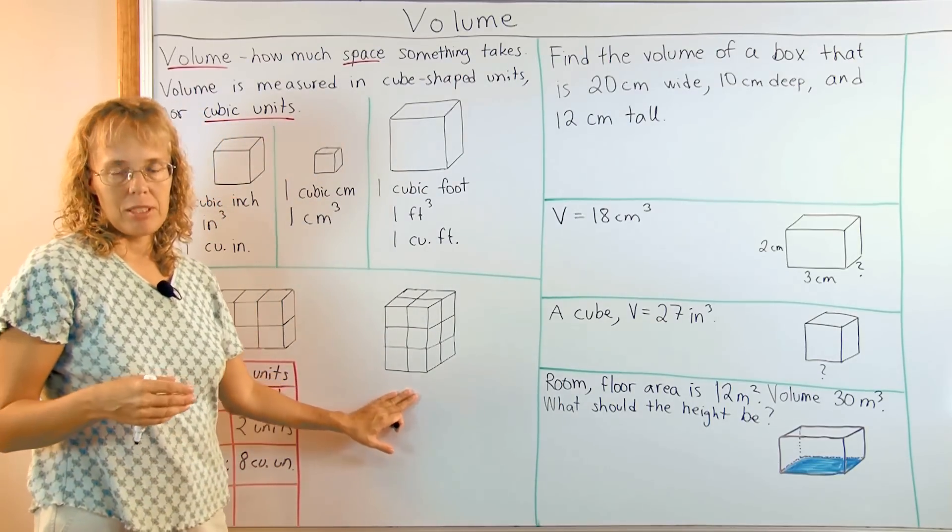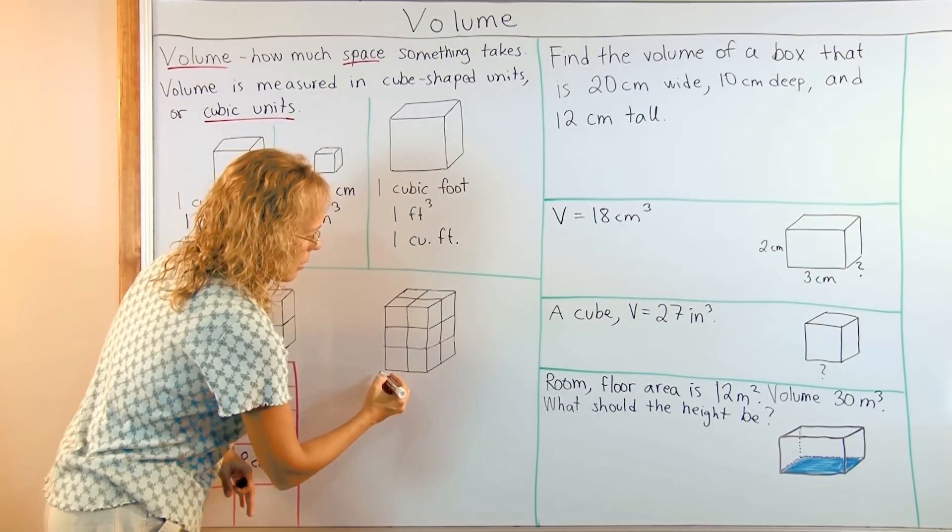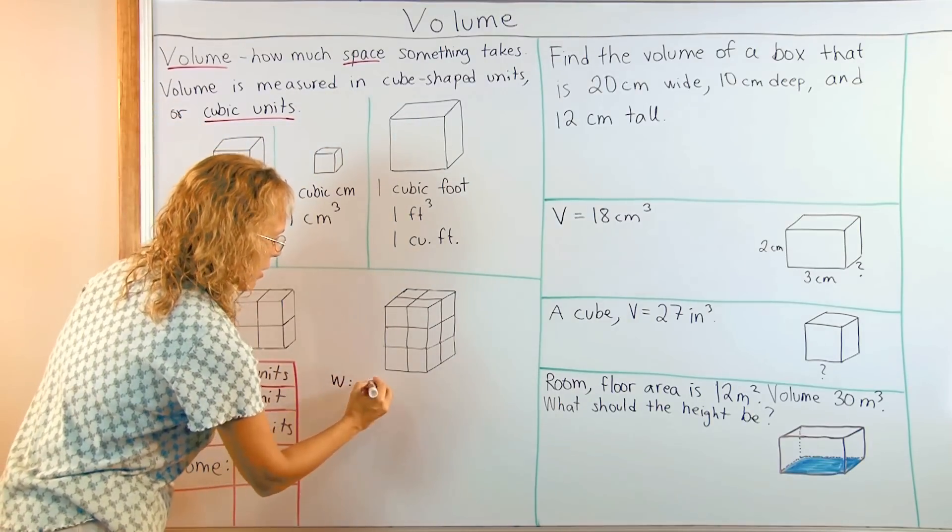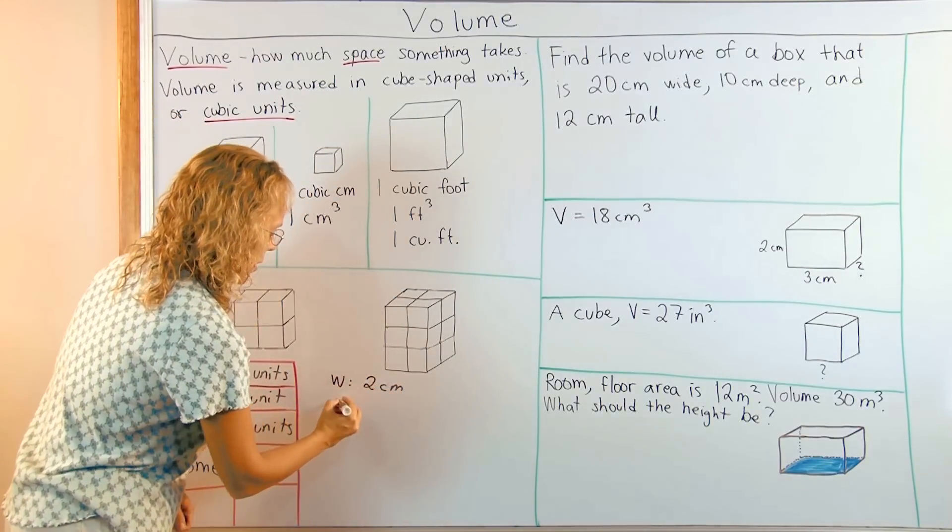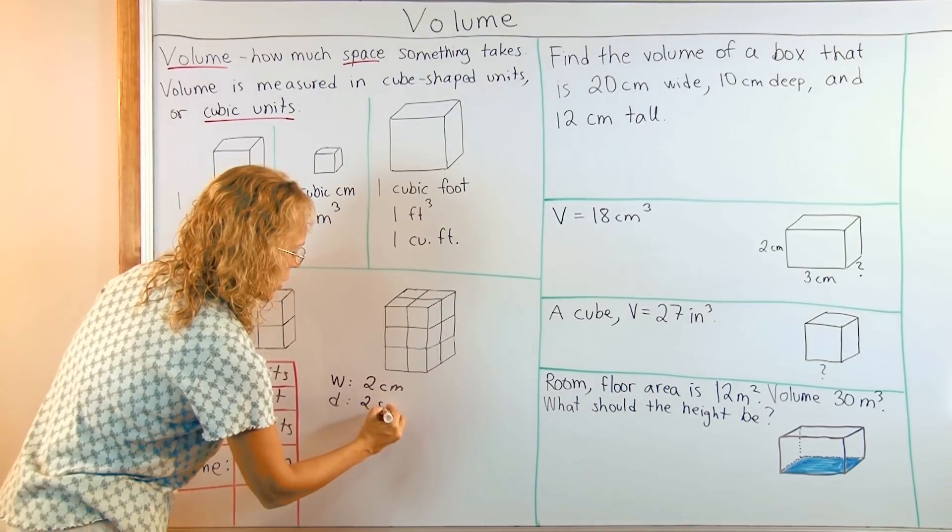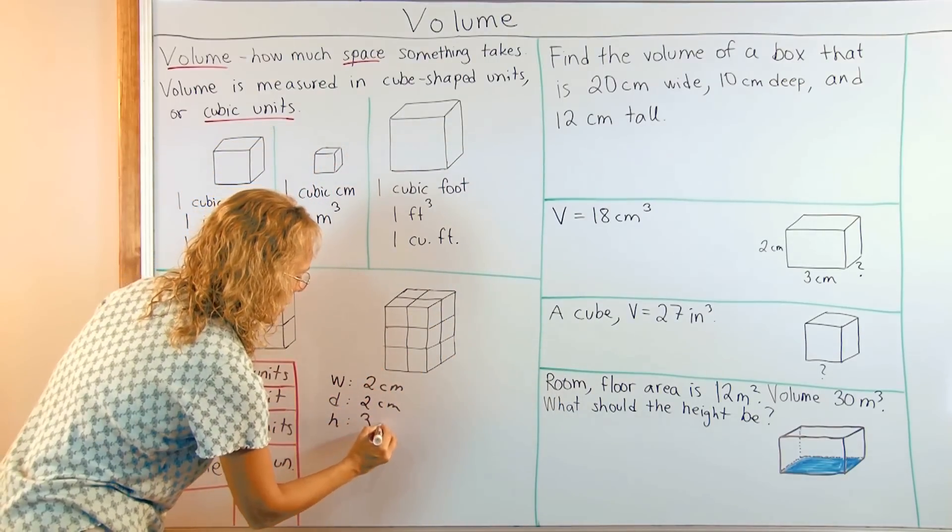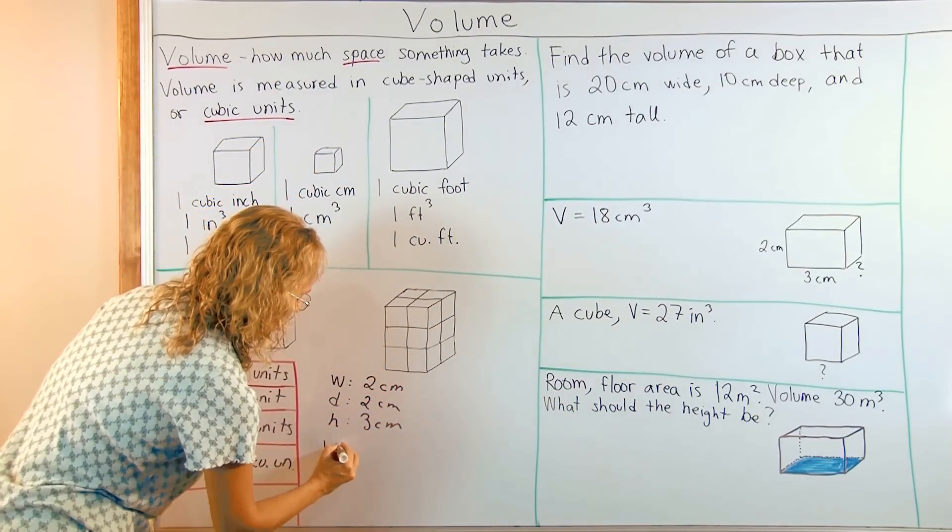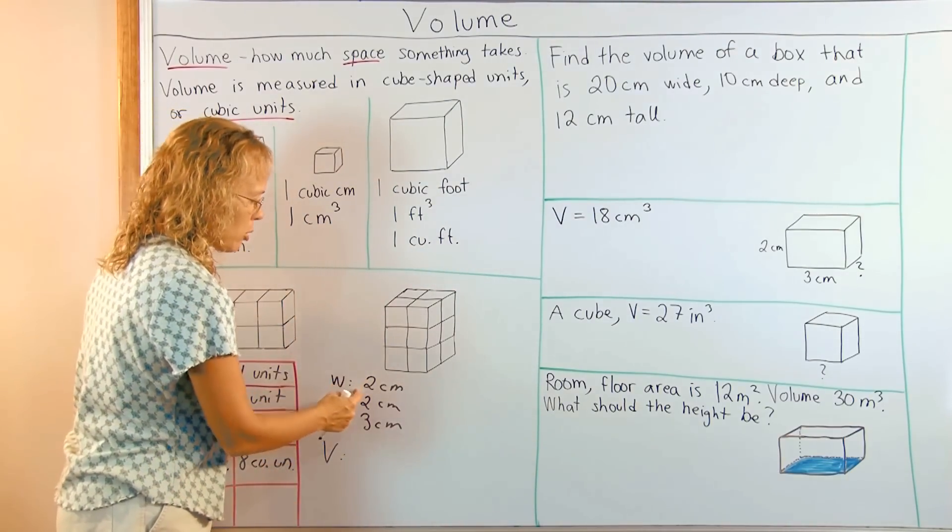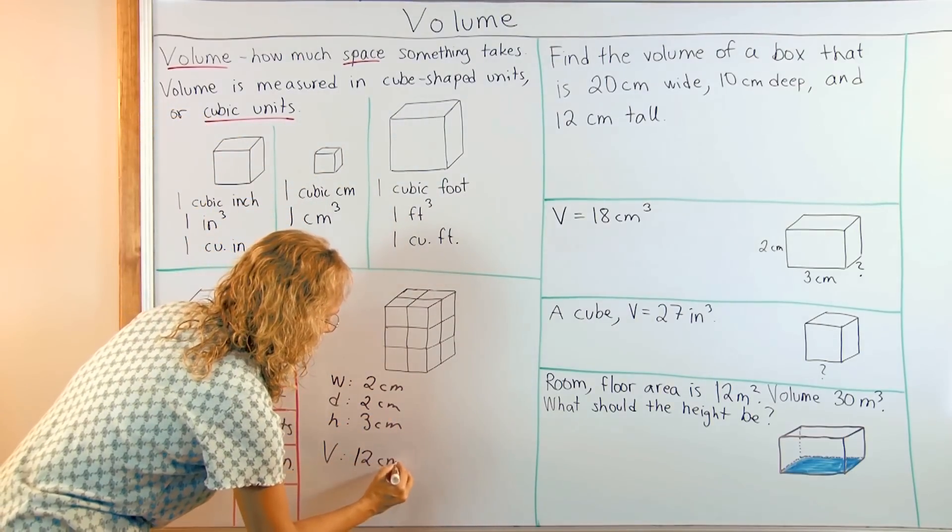But here, let's say that we are using centimeters as a basic unit. So here would be this wide, this width would be exactly two centimeters. And let me write it here. Width, two centimeters. And then depth. How deep is it this way? Two centimeters. And how high is it? Three centimeters. Height is three centimeters. Then we can get volume. This big V is volume. By multiplying. Two times two times three. Which is four times three, twelve. Twelve cubic centimeters.